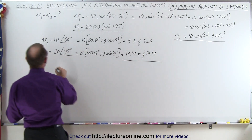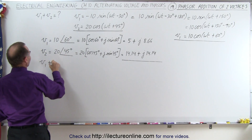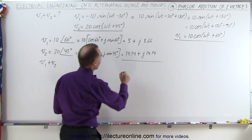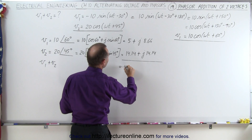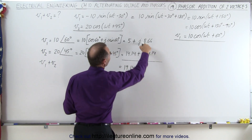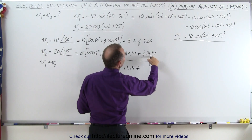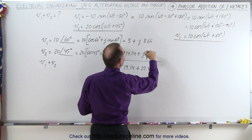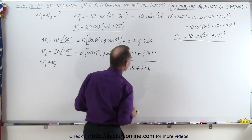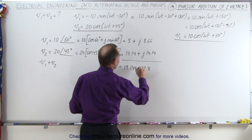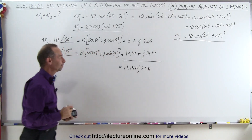Now we can add them together. V1 plus V2 — that's a lot easier now. The real parts add to 19.14, and the imaginary parts add to 22.8. So V1 plus V2 equals 19.14 plus j22.8.